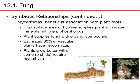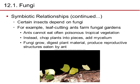Mycorrhizas are fungi beneficially associated with plant roots. They have a high surface area of hyphae and supply plants with water, minerals, nitrogen, and phosphorus, having a positive effect on food supply. The plant in turn supplies the fungus with organic compounds. It's estimated that 80% of vascular plants have mycorrhizas. Some orchids actually require mycorrhizas for their sustenance.